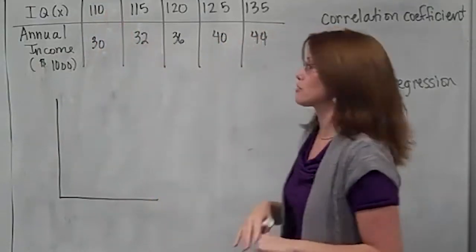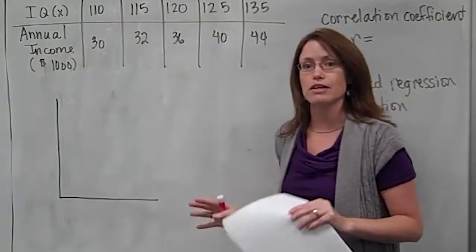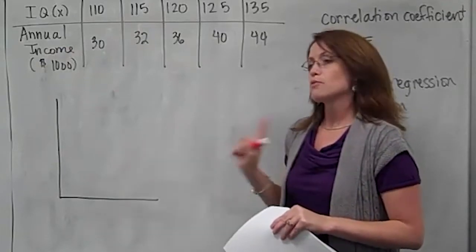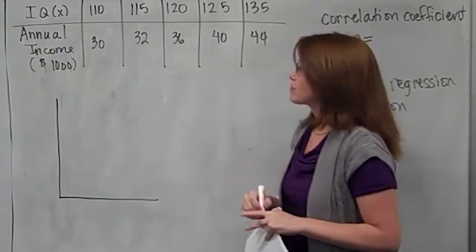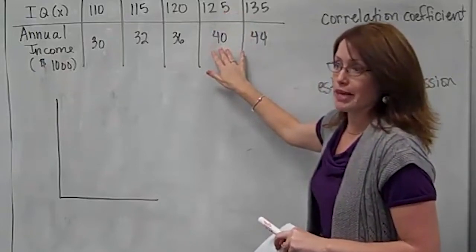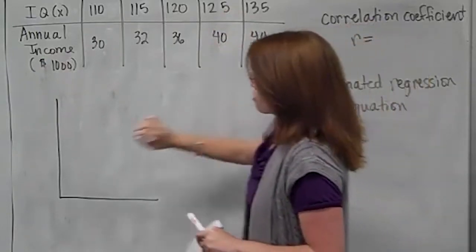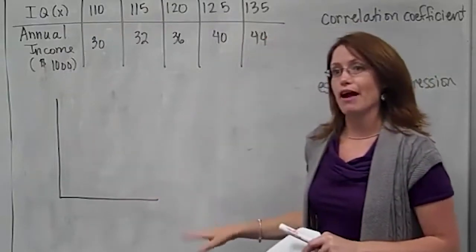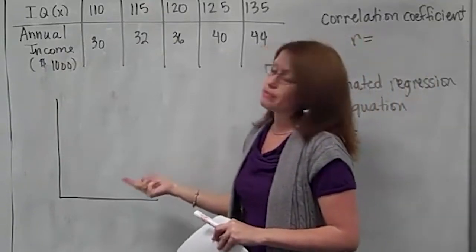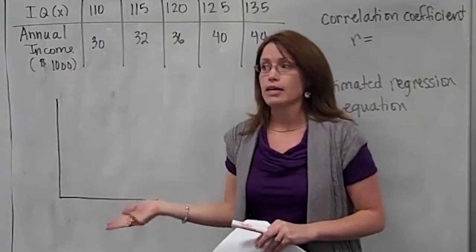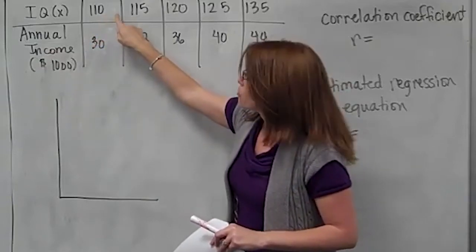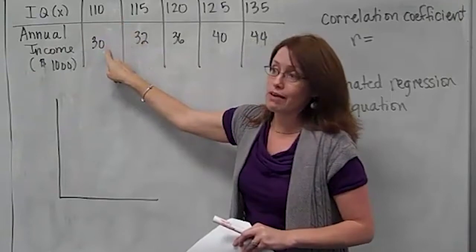There are a ton of factors that go into what your income is going to end up being. Realize what we're doing is a very quick introduction. We're looking at one factor to influence another thing. You can do what's called multiple regression and spend the rest of your life studying how variables are related. We're just going to focus on one. What I want to do is draw what's called a scatter plot. A scatter plot is going to be points, like you plot in X and Y, where you have this X value with this Y value.